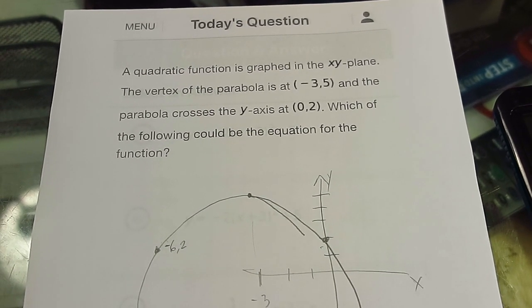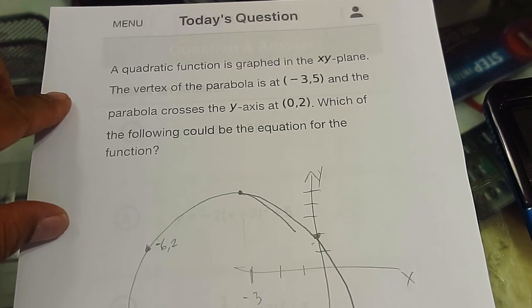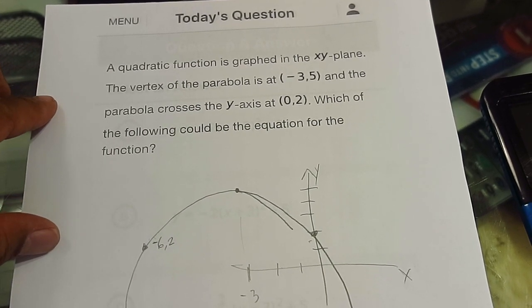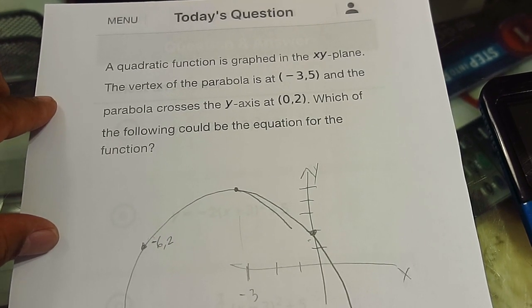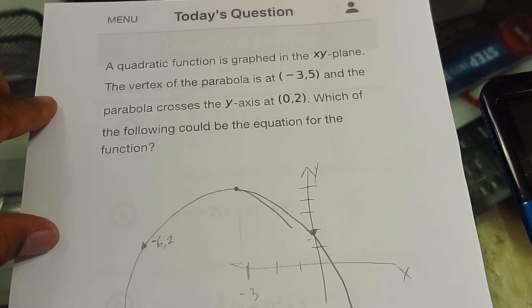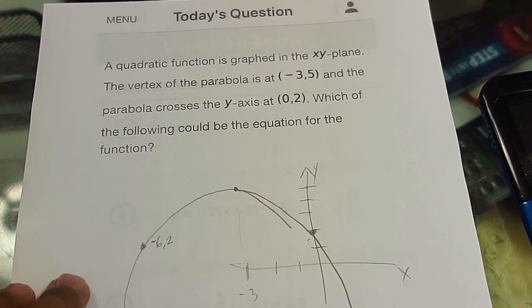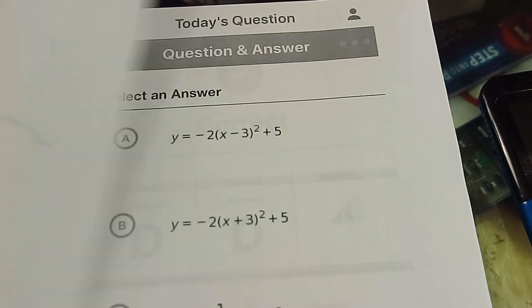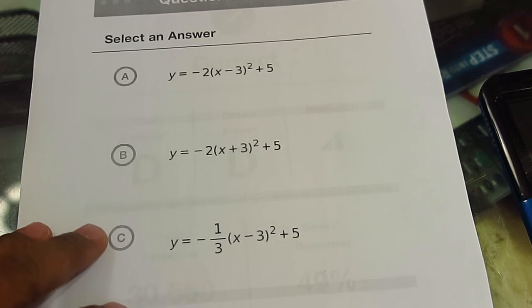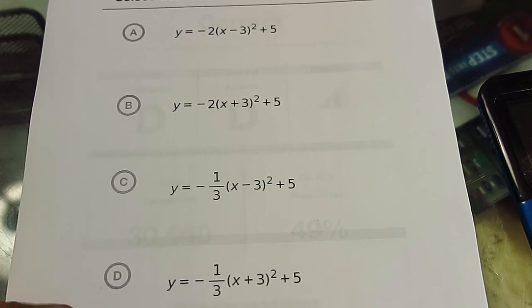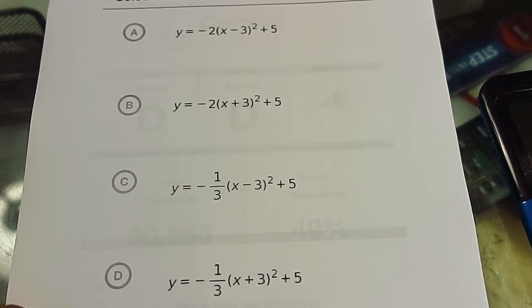The PSAT is going to be in a couple of days and I wanted to show how to use a program that I've written. Today's question says a quadratic function is graphed in the xy plane. The vertex of the parabola is at negative 3, 5. And the parabola crosses the y-axis at 0, 2. Which of the following could be the equation for the function? Here are the choices. You can see that they're all in vertex form.